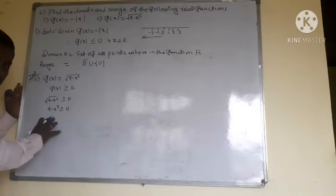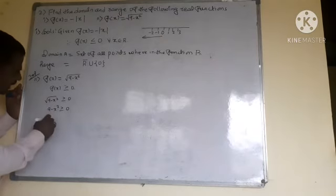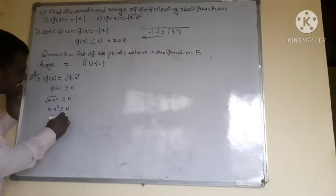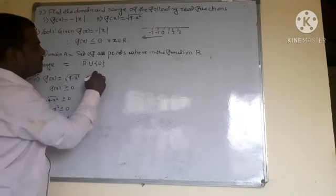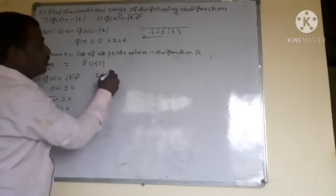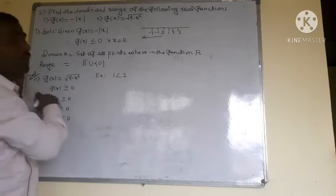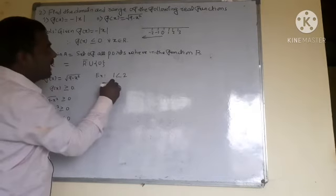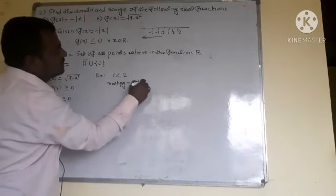When we multiply by negative, we have to change the sign. So x² - 9 ≤ 0 becomes x² ≤ 9 after rearranging. When multiplying both sides by negative, the inequality sign changes automatically.